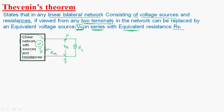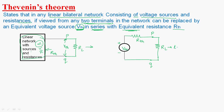After performing Thevenin's theorem, we will get the circuit like this. This is Thevenin's voltage source — all the voltage sources are replaced with a single voltage source, that is Thevenin's voltage VTH, in series with Thevenin's resistance RTH. This is P and this one is Q. Across these two terminals, RL is any load resistance connected to the linear network. IL is the current flowing through the load.